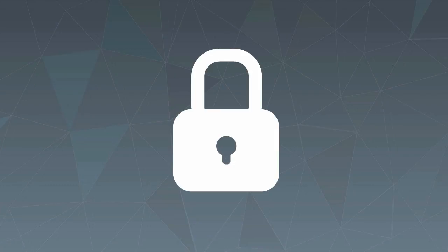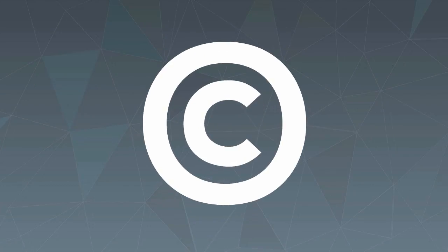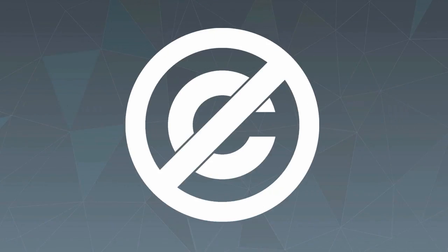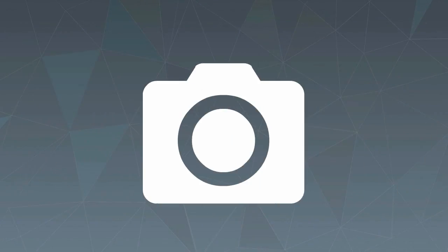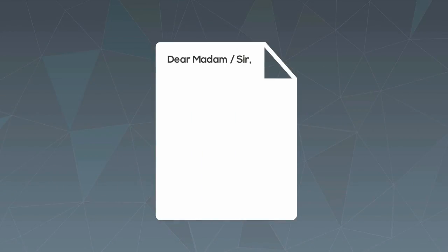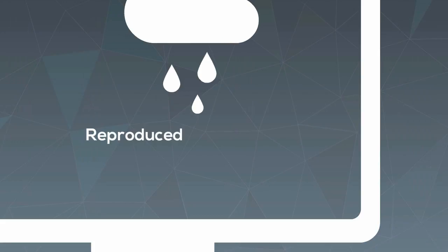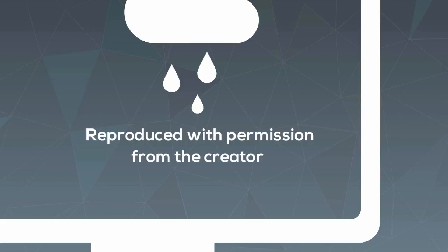You should also make sure you're not breaking any copyright regulations. The only way to ensure this is to use copyright-free images, use your own personal images, or write to the owner of the image and ask permission. If you ask for and receive permission, make sure you show permission was granted when you reference the image by writing 'reproduced with permission from the creator.'